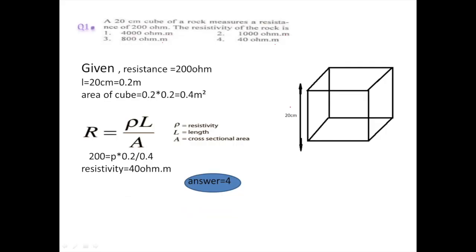The first question is: a 20 centimeter cube of a rock measures a resistance of 200 ohm. The resistivity of the rock is? Suppose this wooden block is a rock. Now we have to find resistivity. The side of the cube is 20 centimeter, as given.